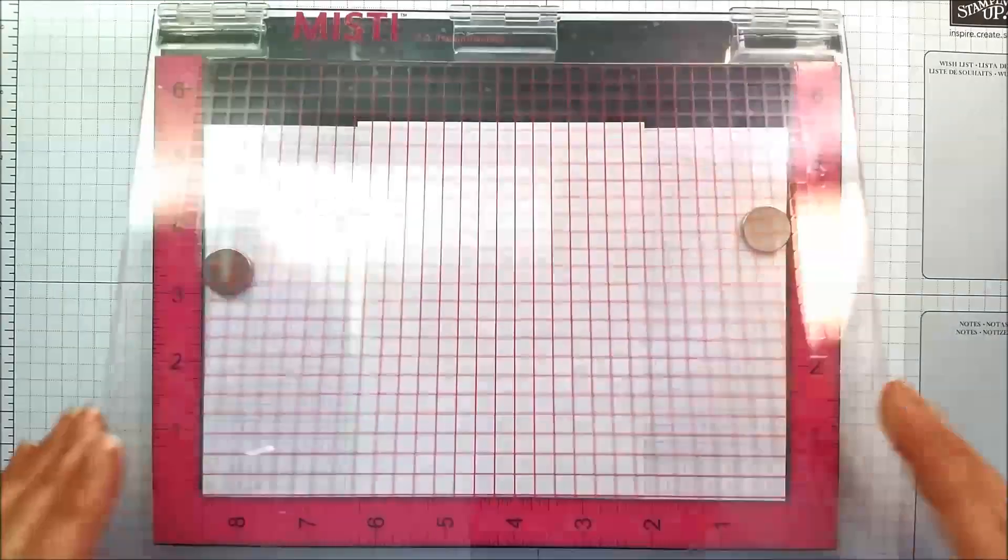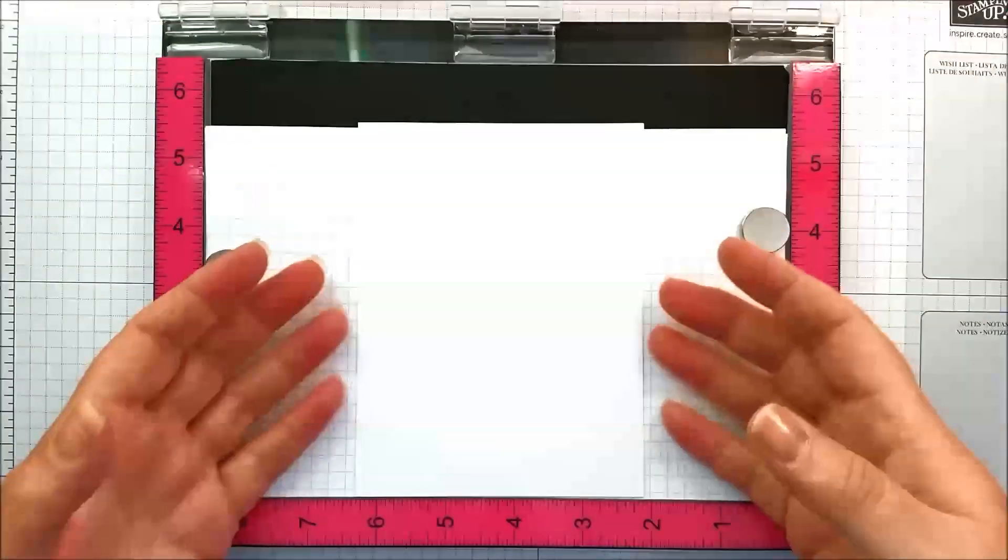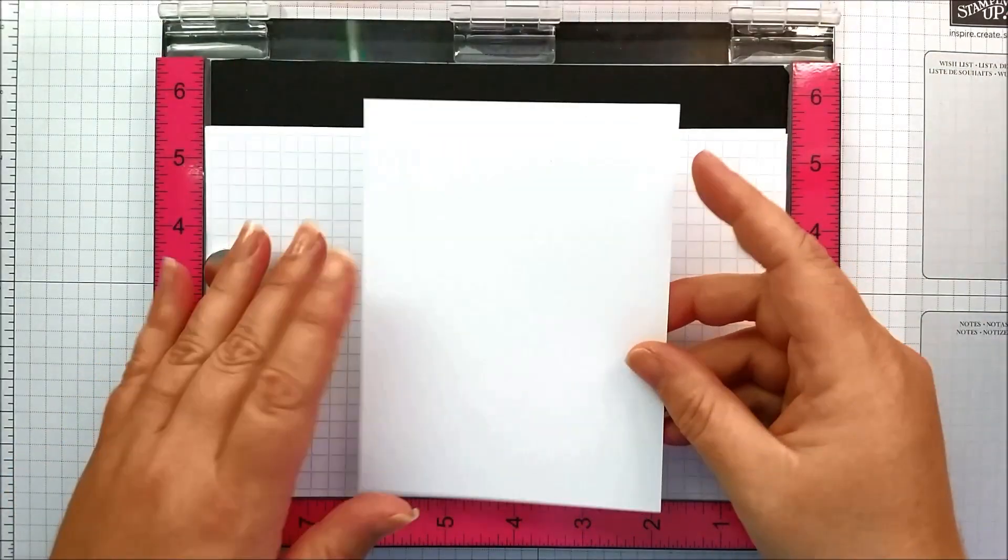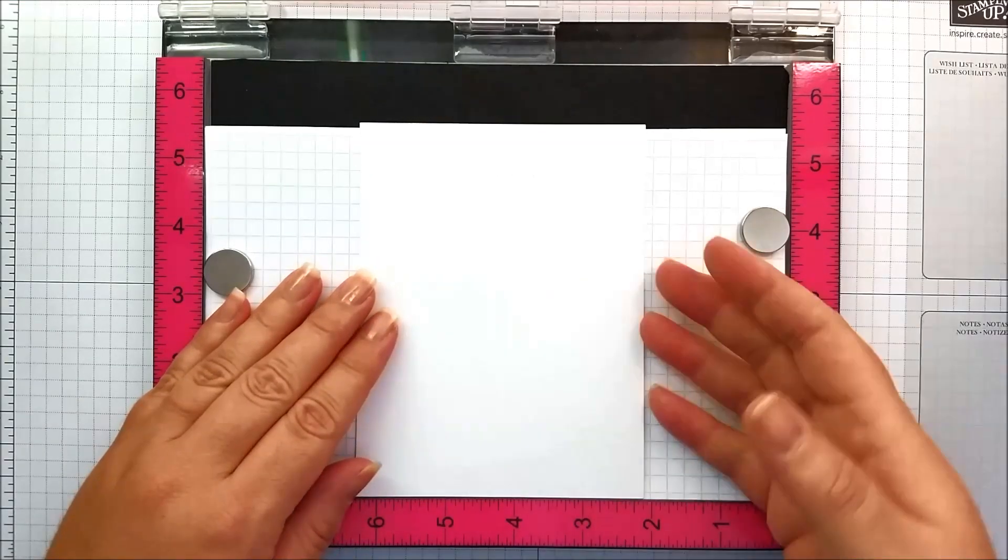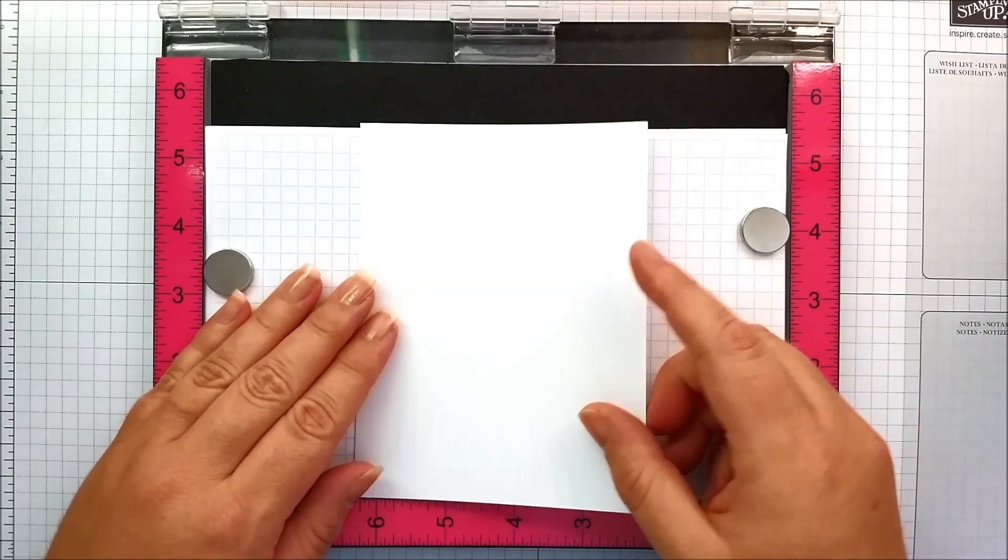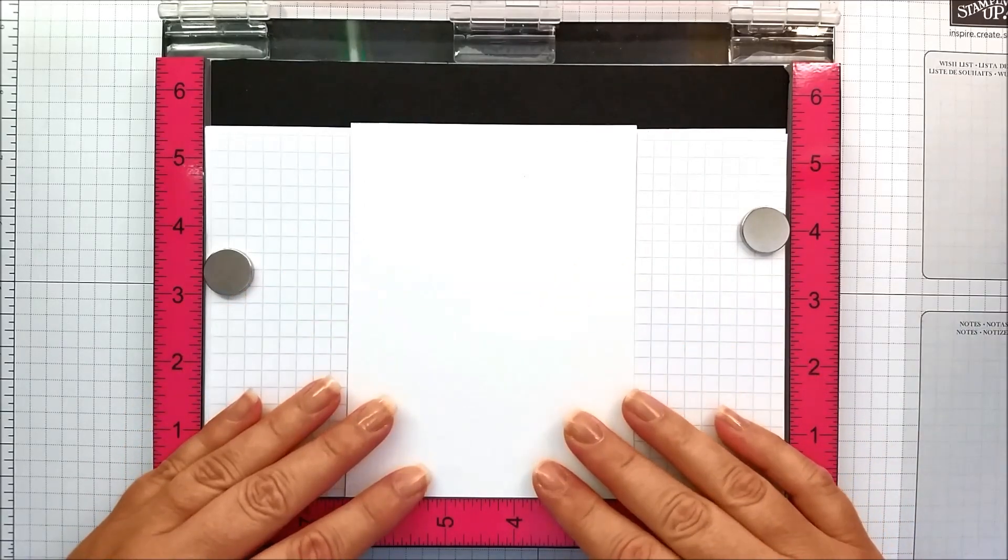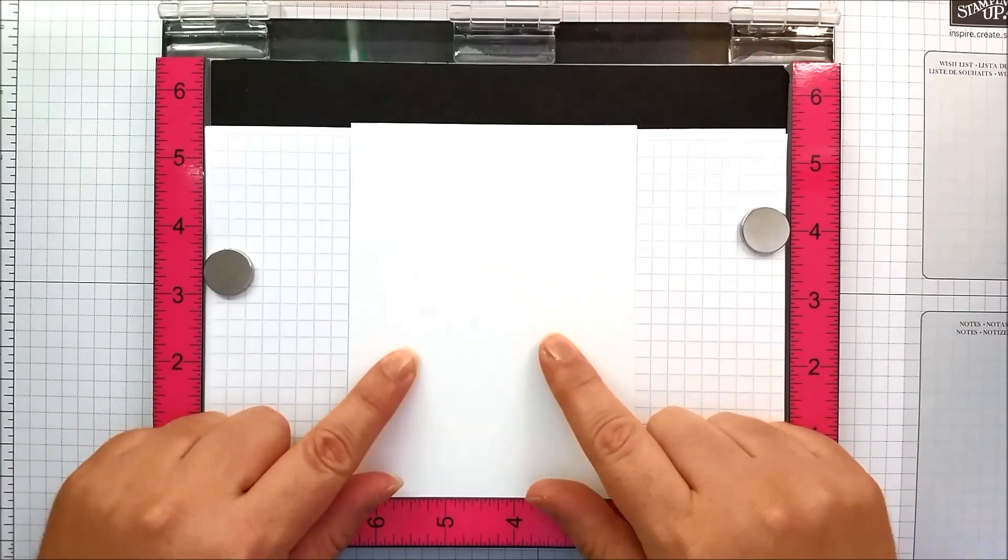We're going to make a series of card fronts and then you can take that piece of paper and do with it whatever you please. I've cut a four and a quarter by five and a half piece of smooth white Neenah solar cardstock and that's what we're going to play with today.